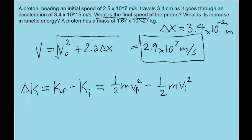Which, if we want to do some refactoring, can be written more simply as 1 half m times, in parentheses, vf squared minus vi squared.